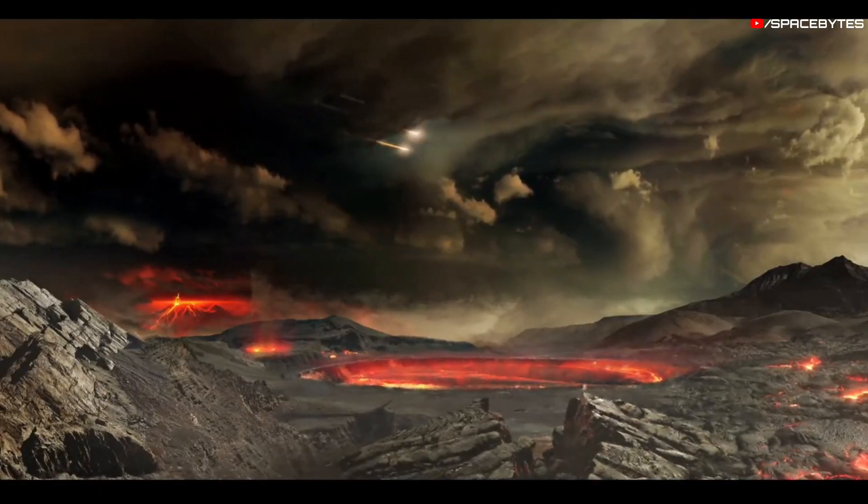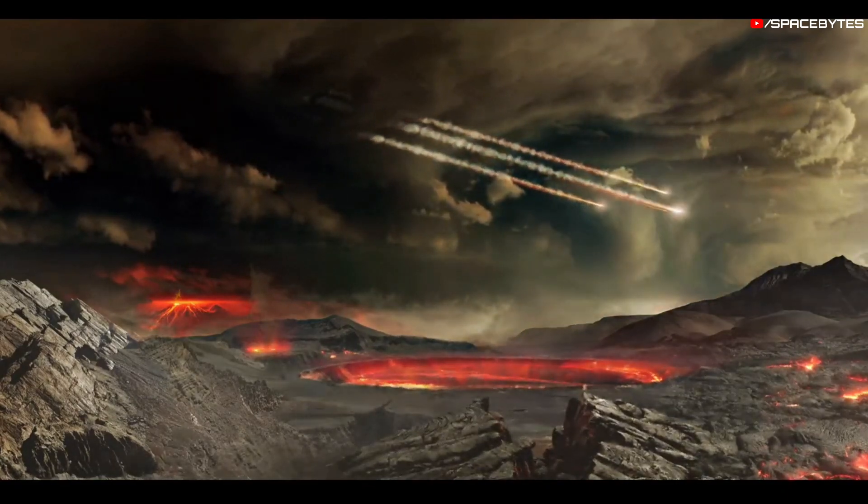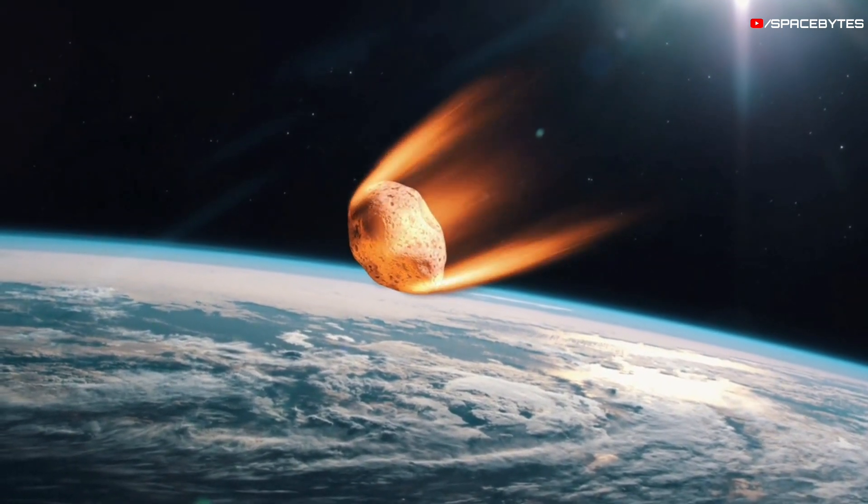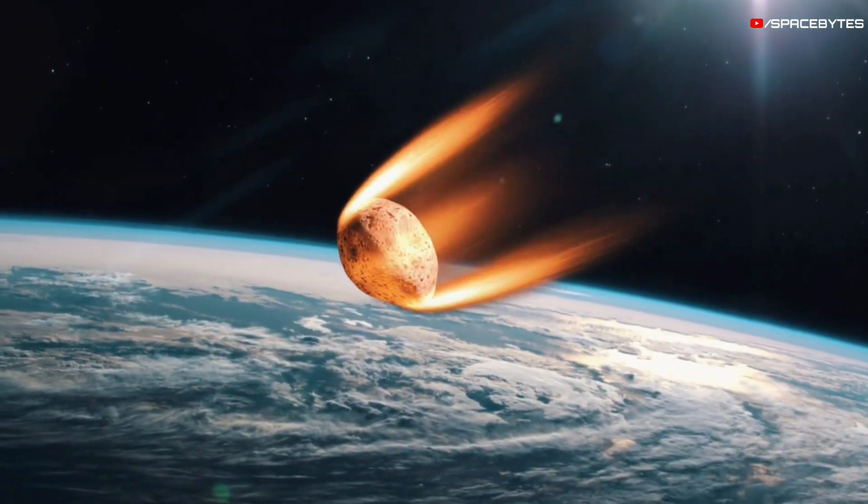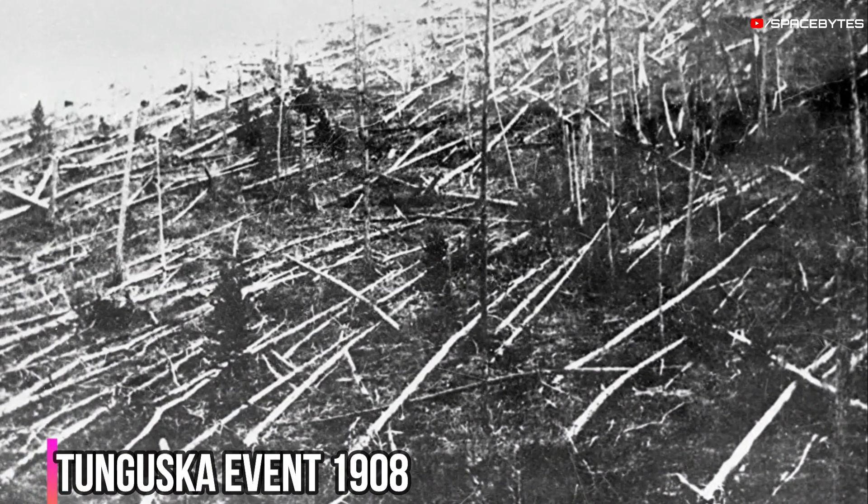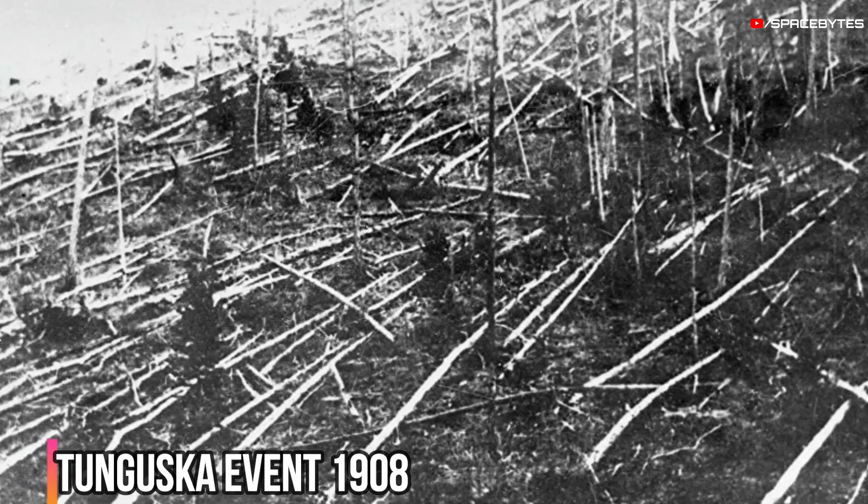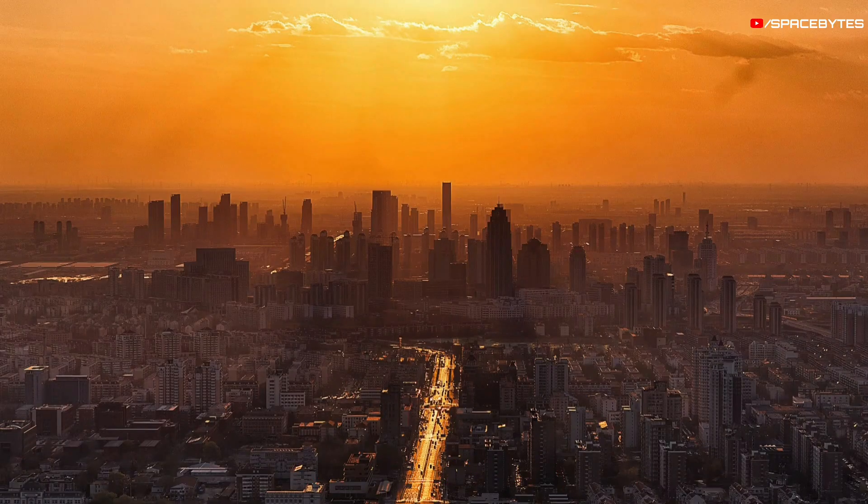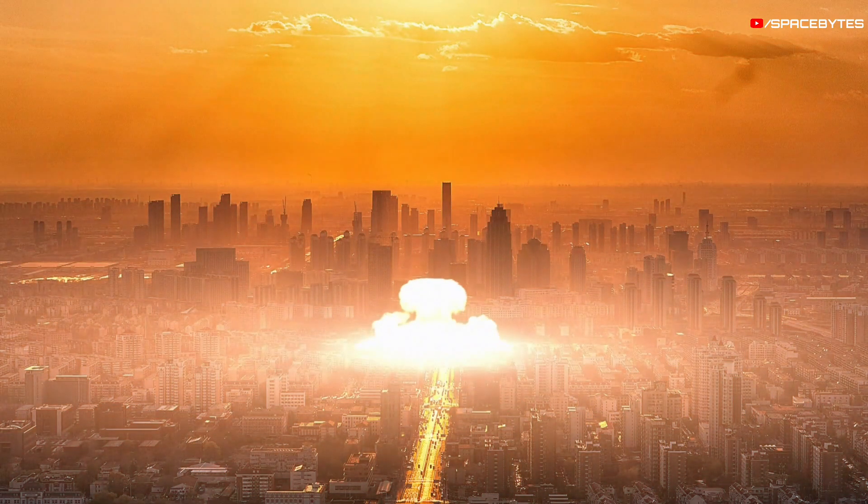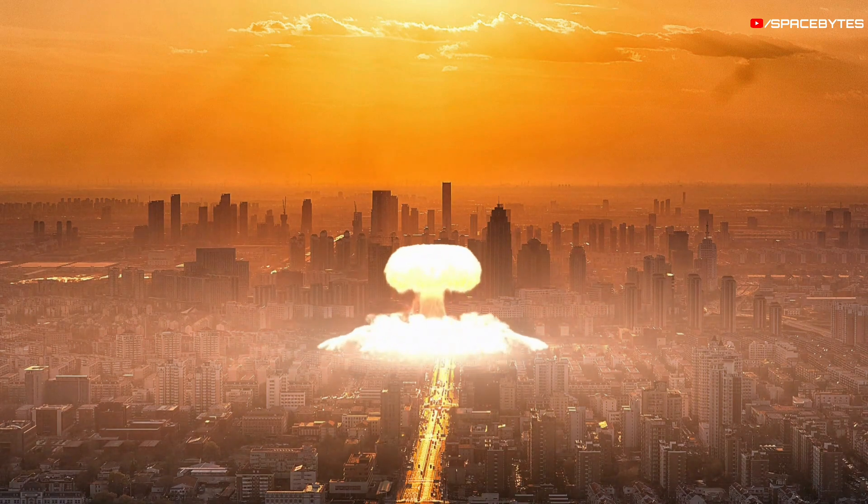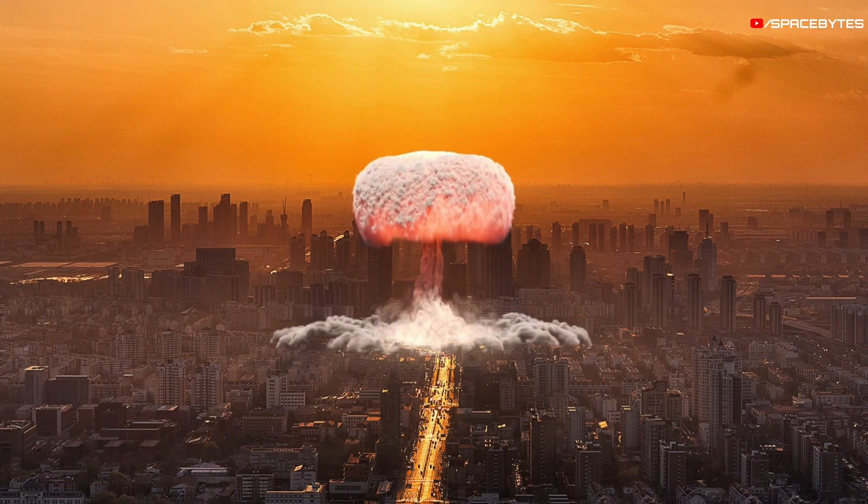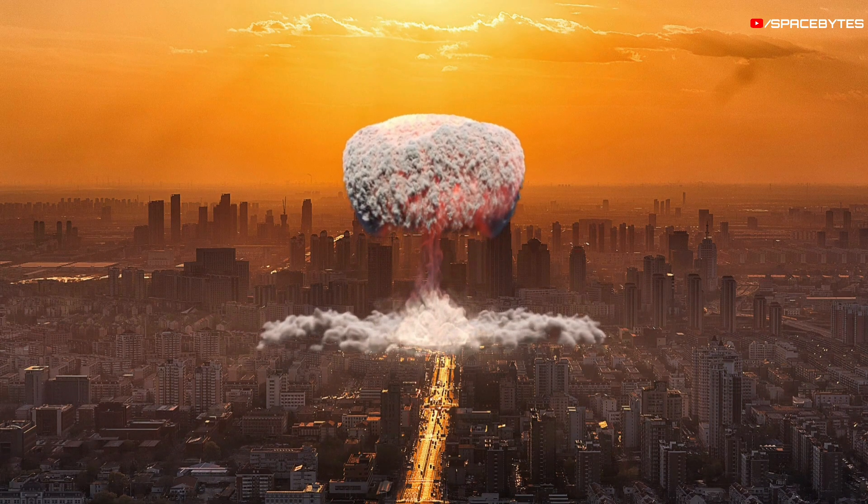Not all asteroid strikes happened millions of years ago. In 1908, an asteroid with a diameter of about 30 meters entered the atmosphere and exploded above ground near Tunguska, Russia. The explosion devastated an area of 830 square miles, destroying nearly 80 million trees. Experts estimate that the blast was roughly 1,000 times more powerful than the atomic bomb explosion in Hiroshima. If this event had occurred over a populated city, it would have resulted in complete destruction.